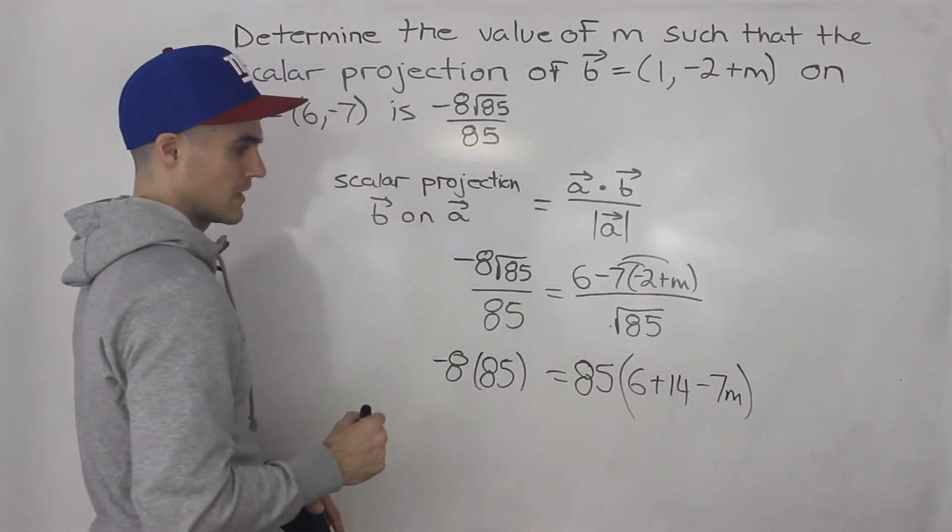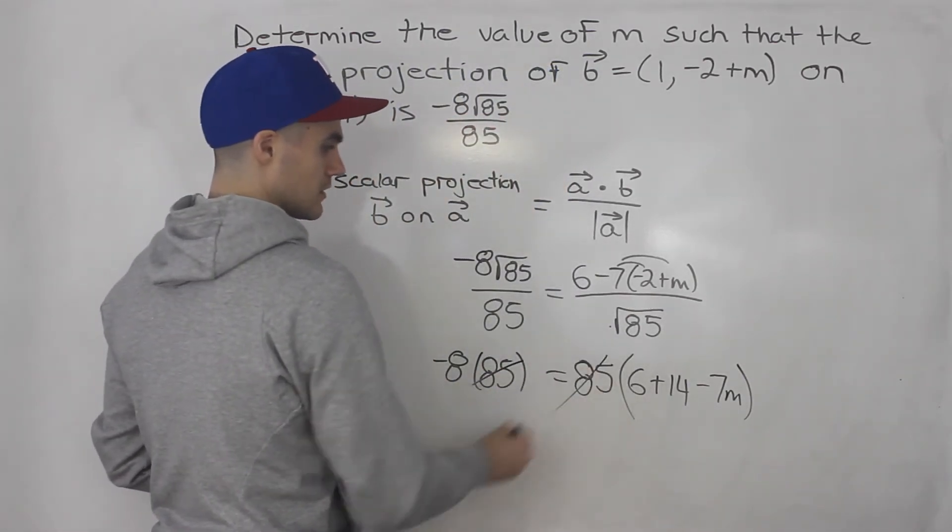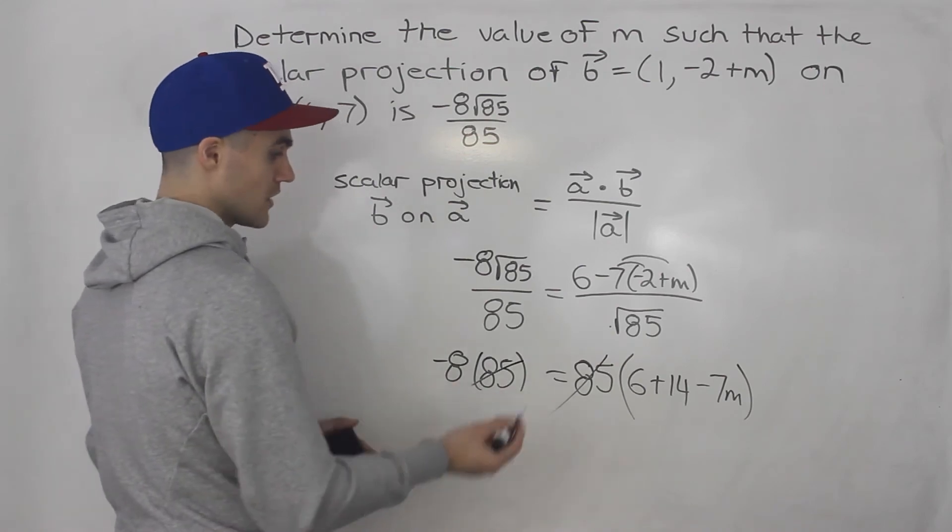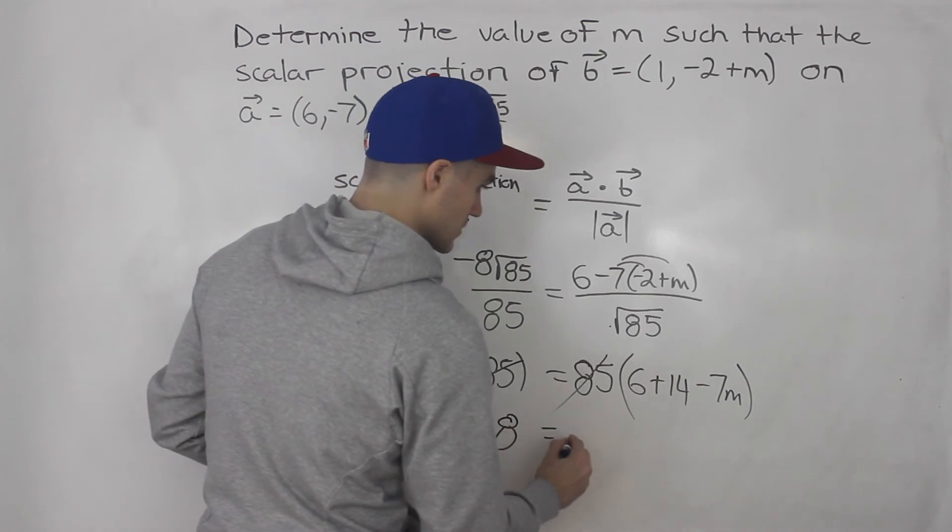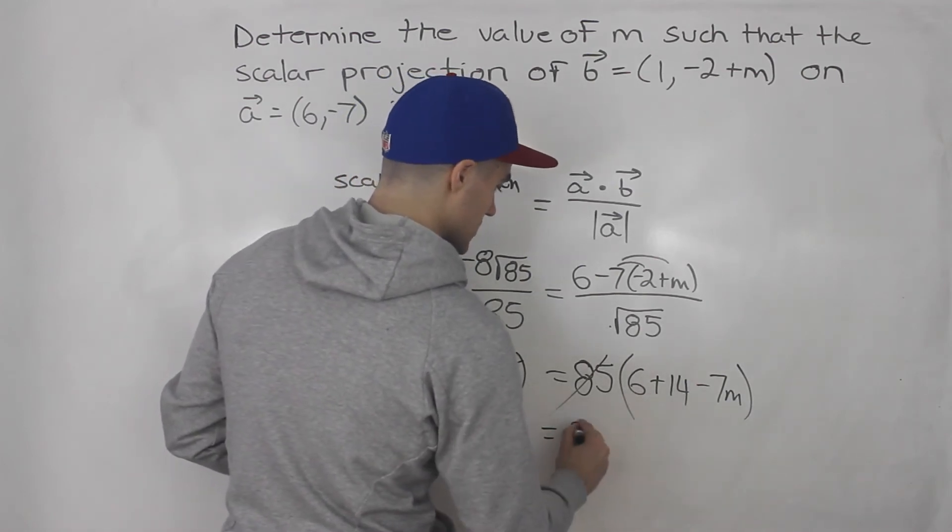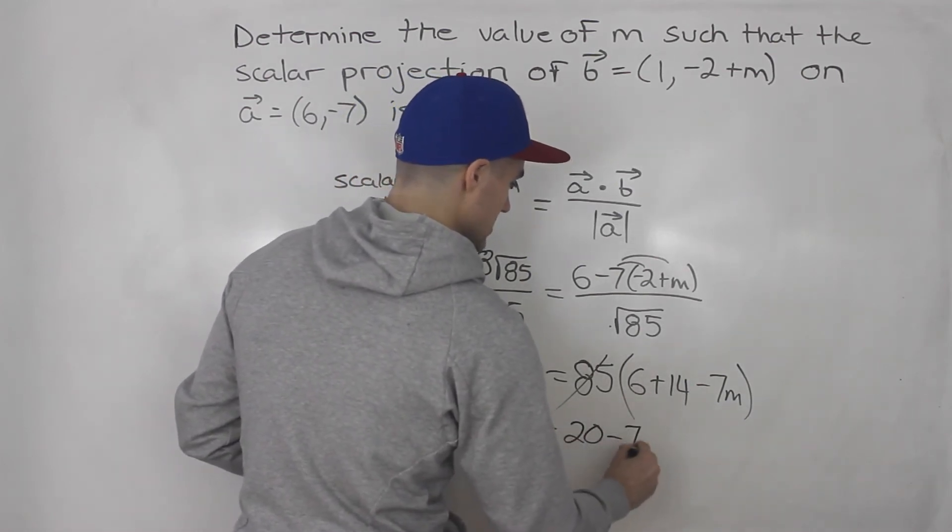Now notice we could simply cross out the 85s, divide both sides by 85. So we got -8 equals 6 plus 14 is 20 minus 7m.